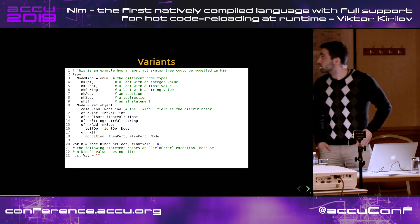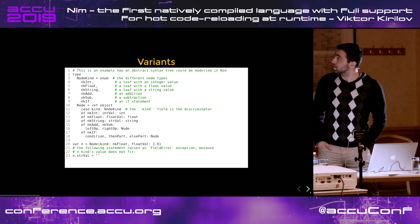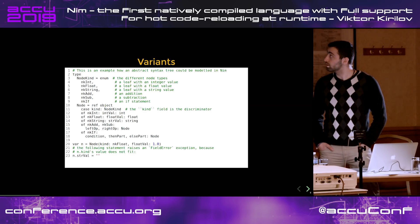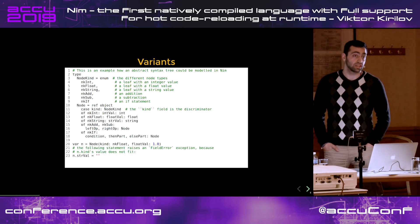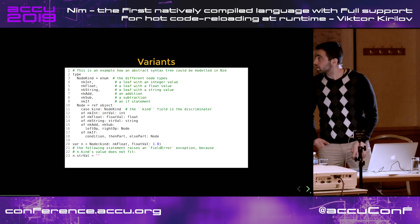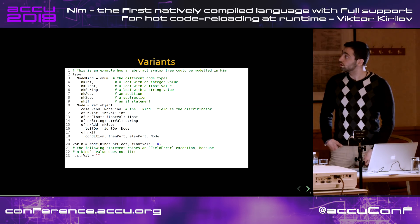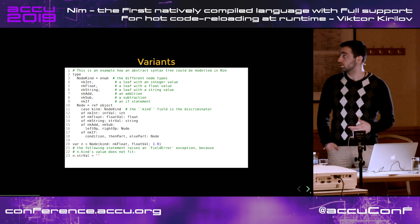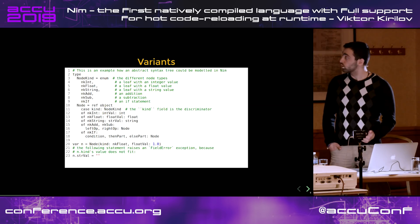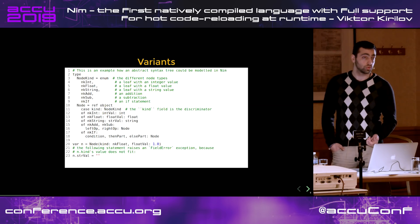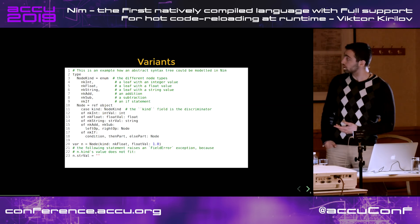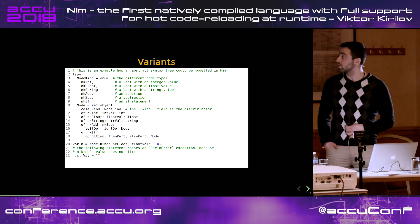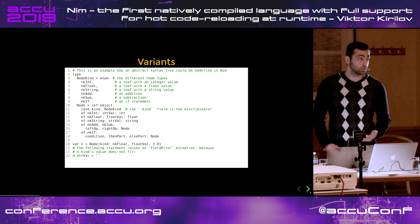Here is how we use discriminated unions. First, inside of the type section, we define an enum with the different node types — if we're about to model node types from an AST. After that, we define a node object where we make a switch on the kind, which is a node kind, and depending on the kind, we have different fields. This is a type-safe union in the language, and here, when we make a node of type float and try to get the string value, we get an error.